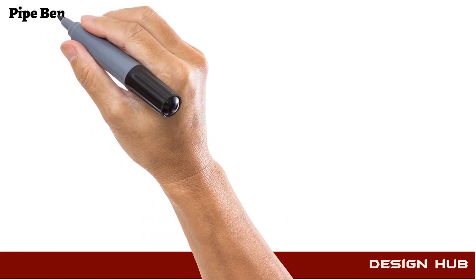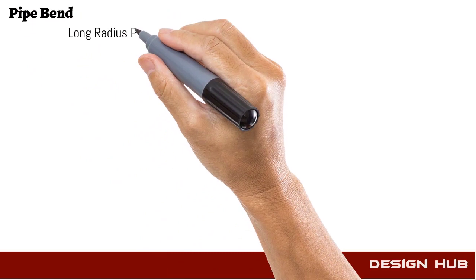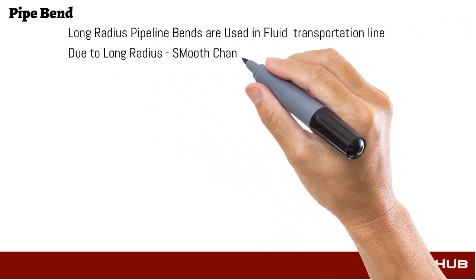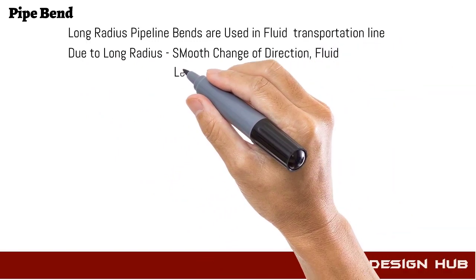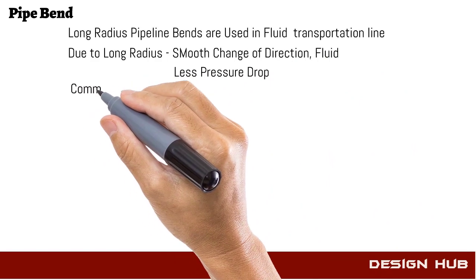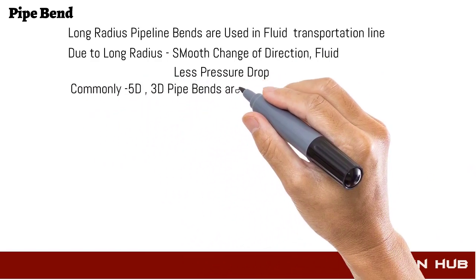Pipe bends are made by pipe. Their bend radius is mostly long radius, and these are also found in 5D, 3D, etc. Due to long radius and smooth change in direction, less pressure drop occurs.